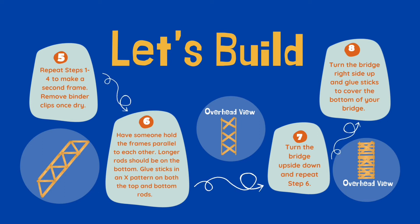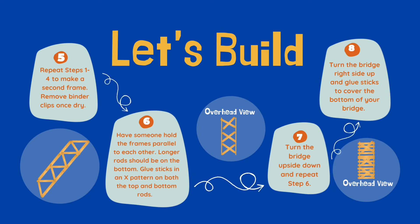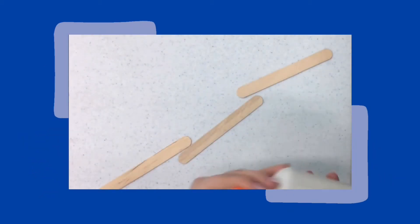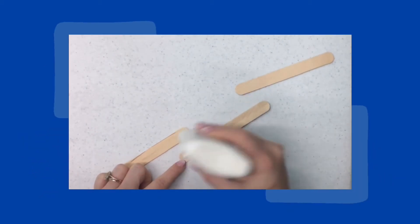In step five, repeat steps one through four to make a second frame. Have someone hold the frames parallel to each other with the longer rods on the bottom. Glue sticks in an X pattern on both the top and bottom — I have pictures beside each figure to help. Once you have X's glued on the top and bottom of your bridge, turn the bridge right side up and glue sticks to cover the bottom.